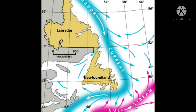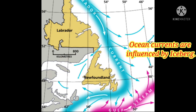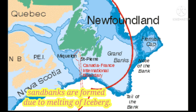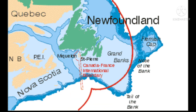Icebergs are also important for oceanographers, who study icebergs to find out how ocean currents are influenced by them. Icebergs contain sediment and rock, so due to the melting of icebergs, sediment and rock deposit into the ocean year after year and form sandbanks.